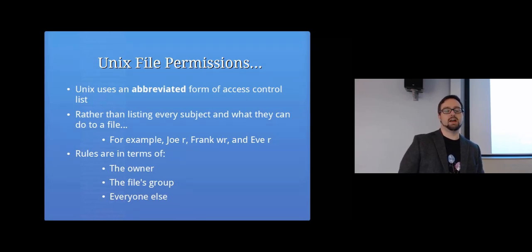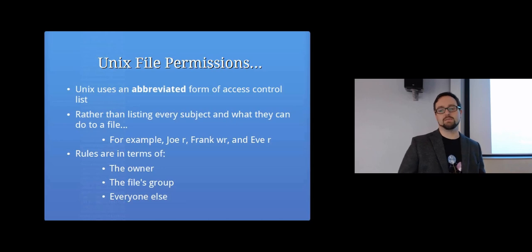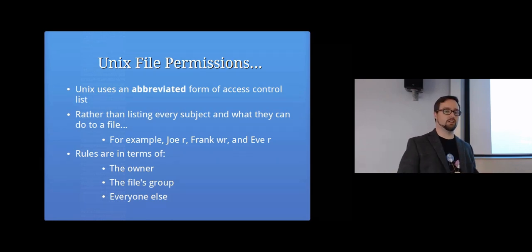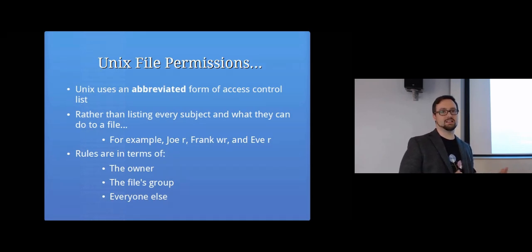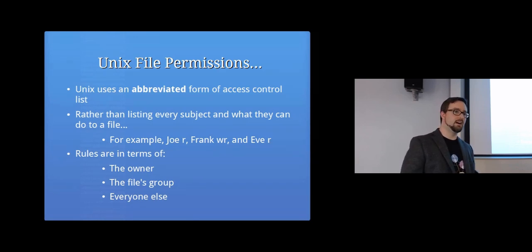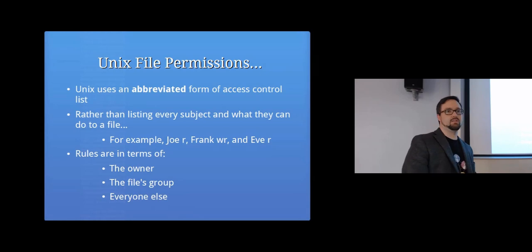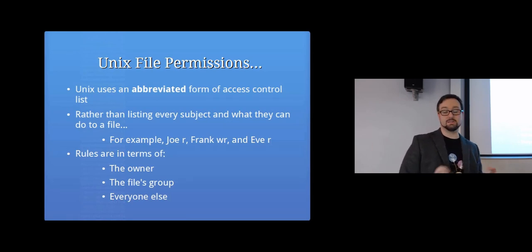The way access controls work on Unix is a simplified version of access control lists. Rather than specifying per-user permissions, Unix file permissions simplify everything into just three groups: what the owner of the file can do, what anyone in the group associated with the file can do, and what everyone else can do. You can't say a specific user like Bob gets read access individually — you work with owner, group, or everyone else.